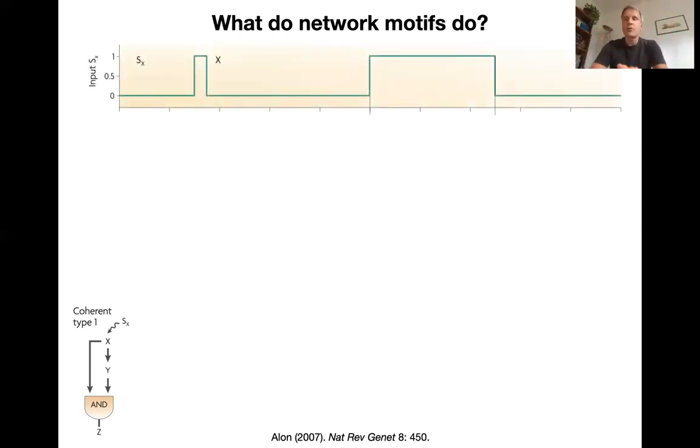But back to the coherent type one motive here. What does it do? It seems completely redundant, right? So there's two activation pathways, but one of them is indirect. So what it does is imagine that you have an input signal coming in here at the top and there are two pulses. There's a very short pulse of signal that immediately induces a very short pulse of expression of X. And then there's a longer pulse that has a more sustained expression of X.